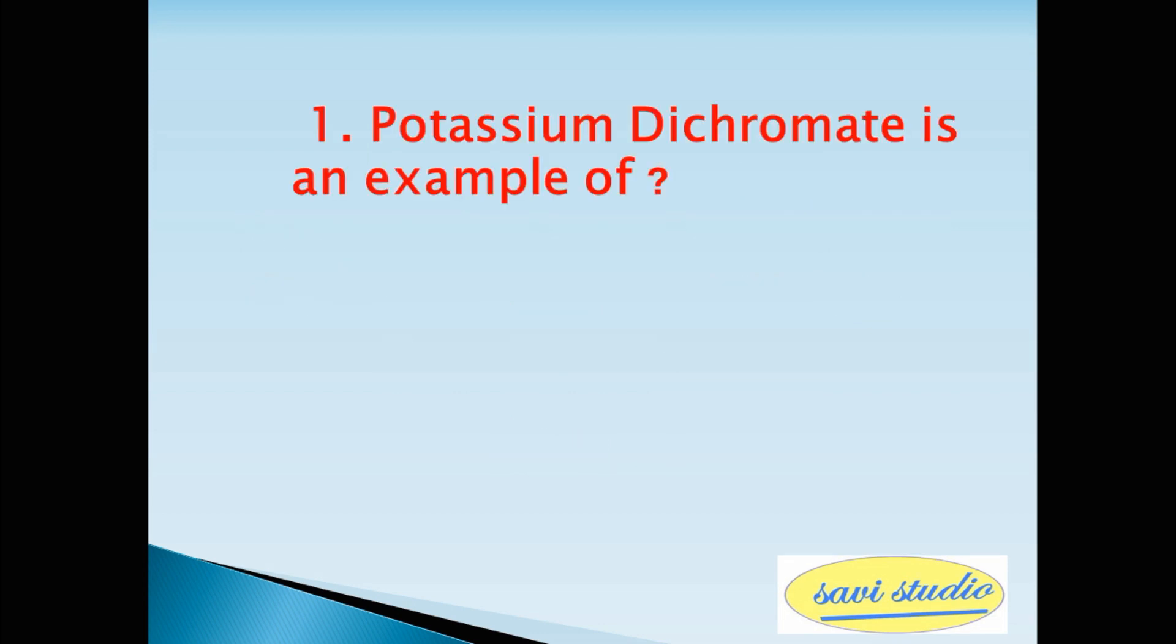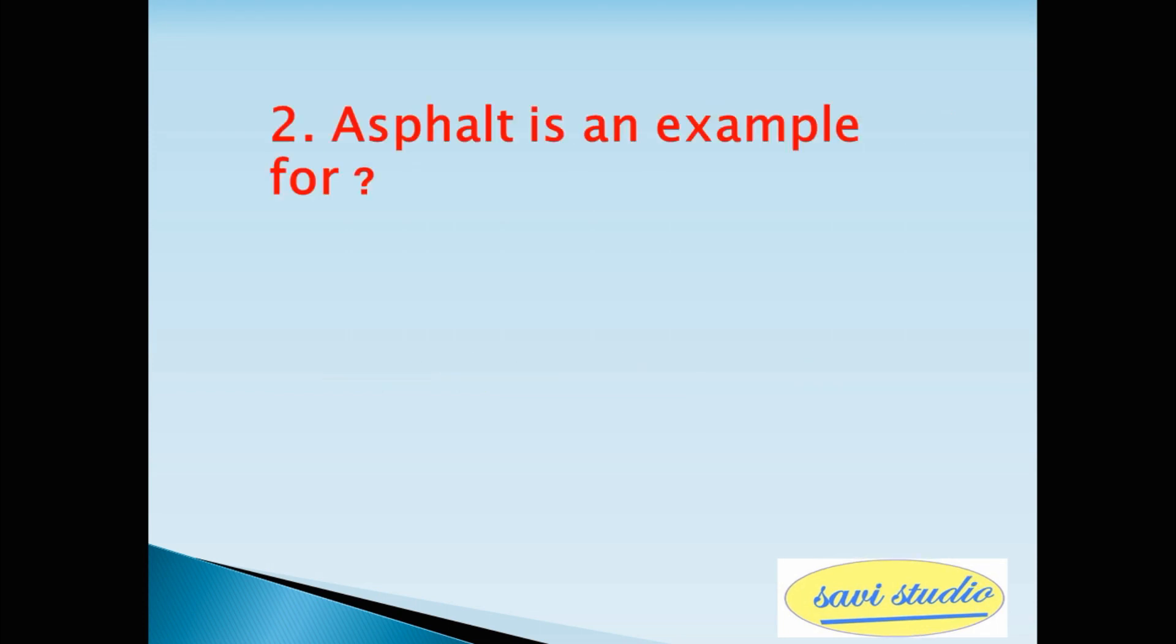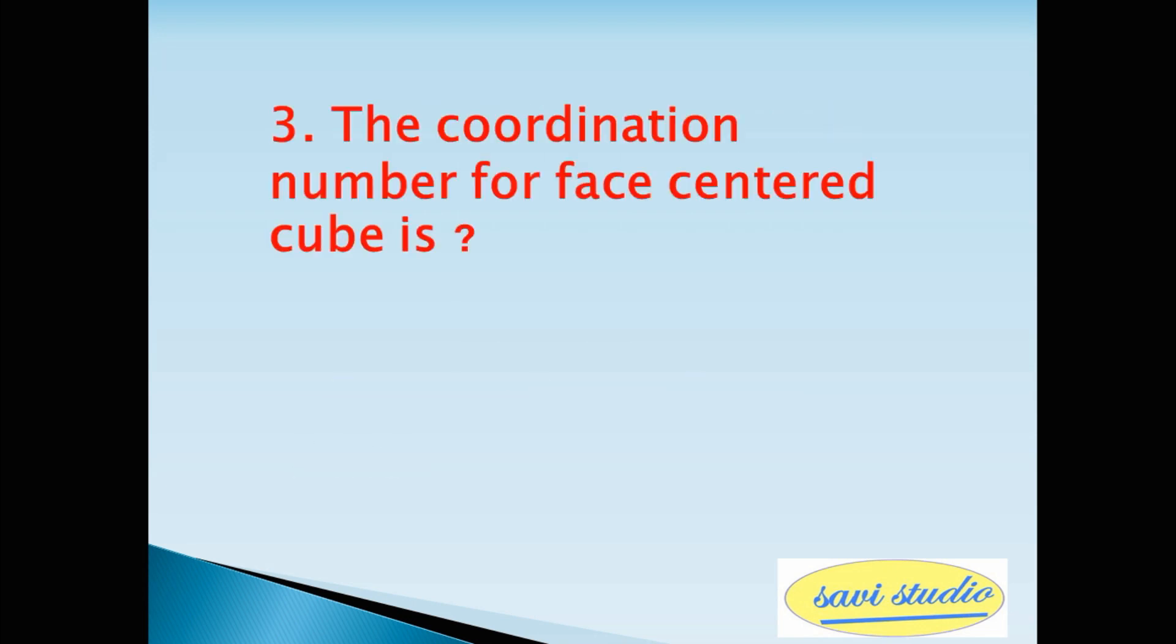Question 1, potassium dichromate is an example of? Crystalline solids. Question 2, asphalt is an example for? Amorphous solids. Third question, the coordination number for face centered cube is? Answer 12.